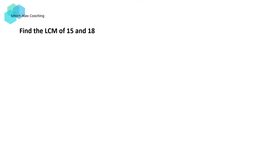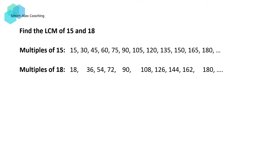Suppose we would like to find the lowest common multiple of 15 and 18. One way is to list out all the multiples of 15 and the multiples of 18, and then compare those two lists to find the common multiples. We can see that 90 is common, and so is 180. As we continue writing out all the multiples, we'll find that the common multiples keep recurring infinitely. But because our aim is to find the lowest common multiple, we see that 90 is the lowest value, and so 90 is the LCM of 15 and 18.